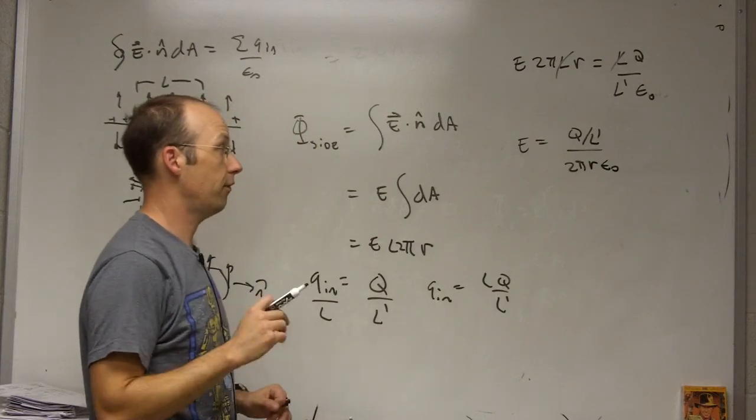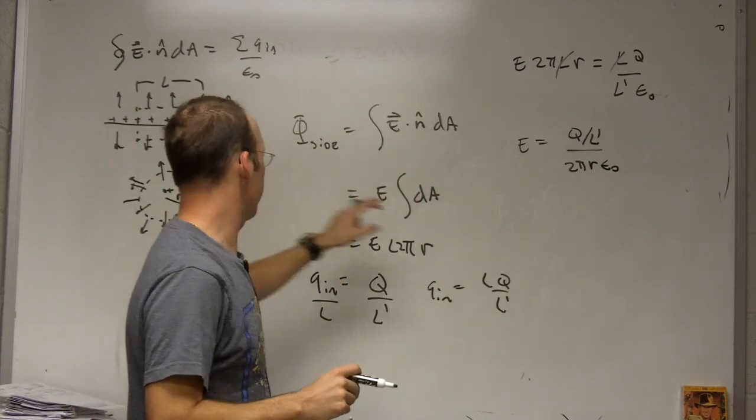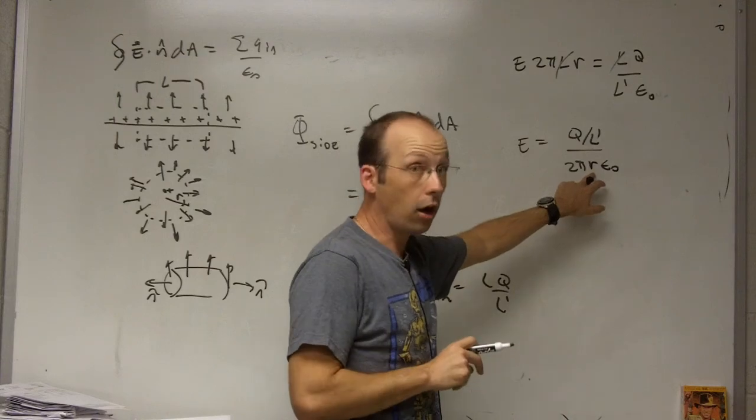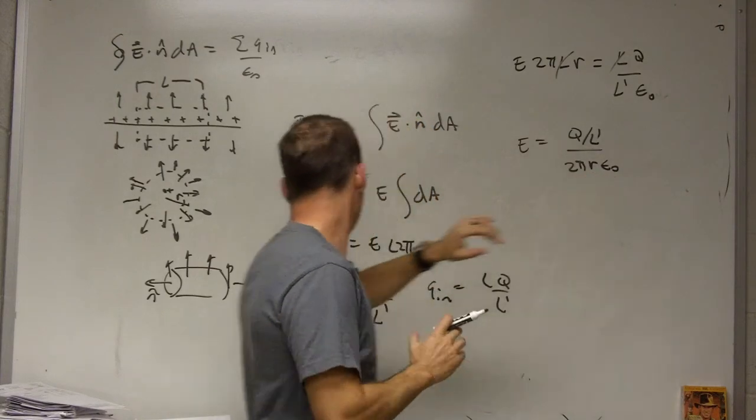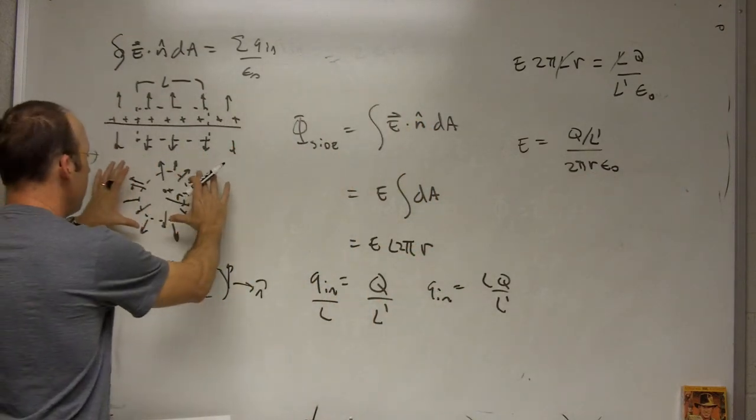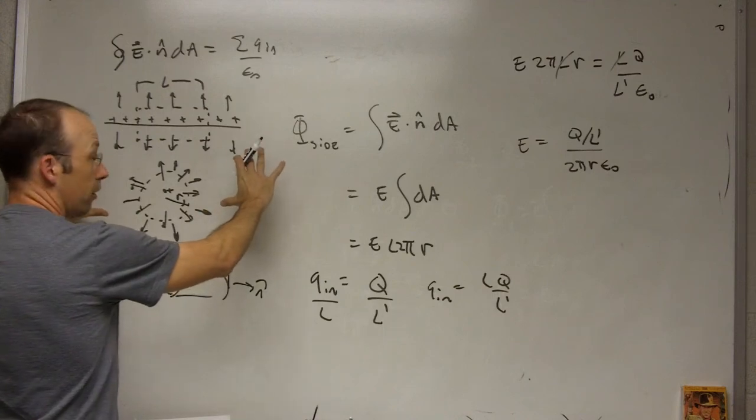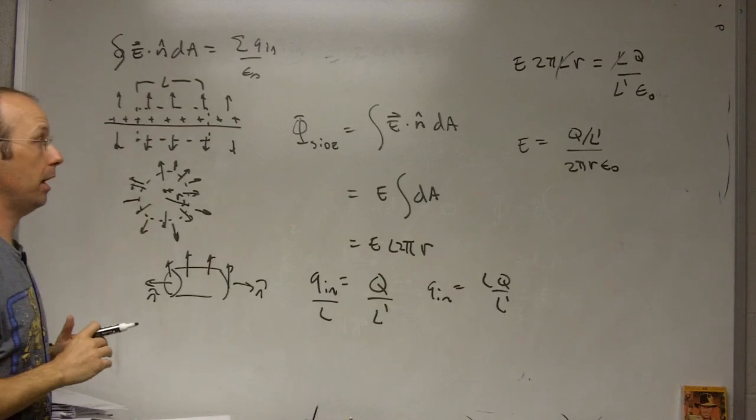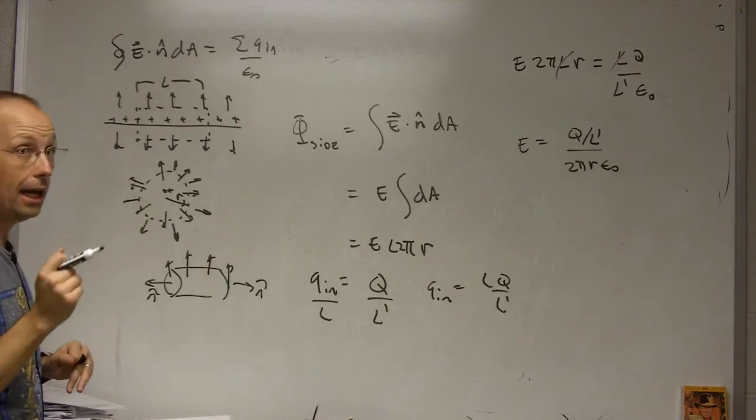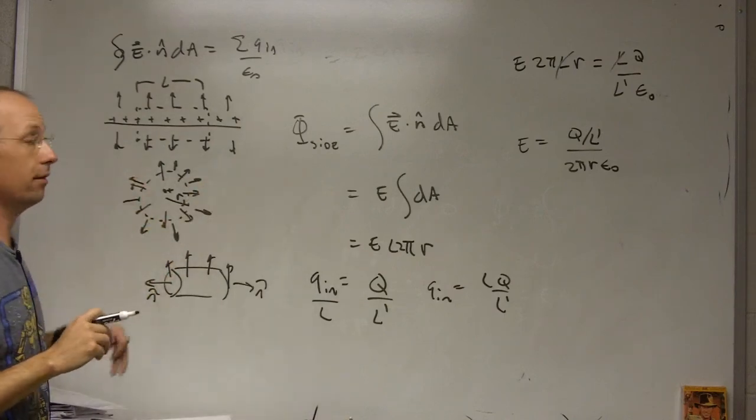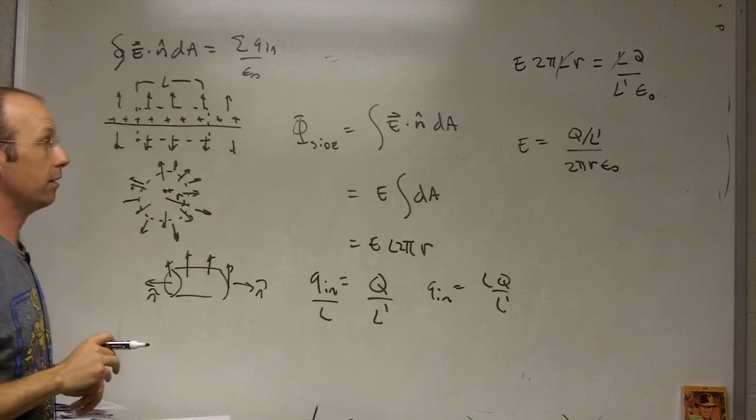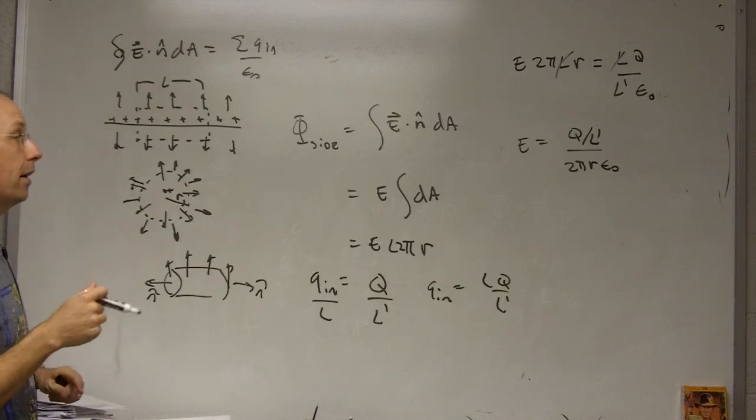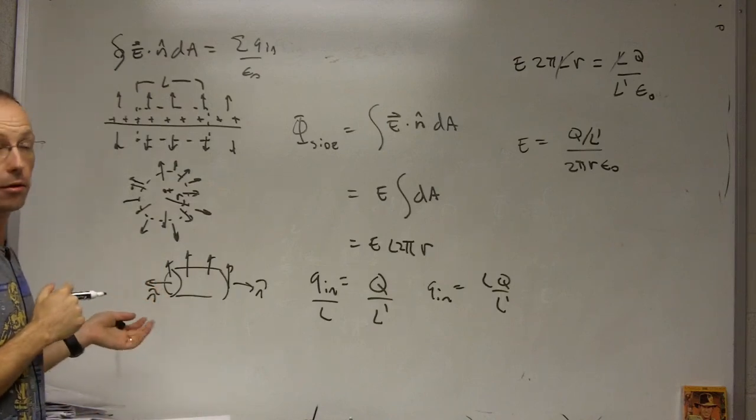And that's the electric field due to a line of charge. R is still there, I didn't cancel. So as I get the radius of the cylinder larger, the magnitude of electric field goes down. And that's exactly what we had before. But again that's the magnitude. It's not the direction. It's not the electric field vector. So if I want to find the vector then I have to know something about the configuration.